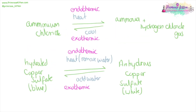The half arrow on top of the other half arrow going the opposite direction is the symbol for a reversible reaction. Ammonium chloride will decompose into ammonia and hydrogen chloride gas upon heating — this is an endothermic reaction. Cooling it is an exothermic reaction. Hydrated copper sulphate, which is blue, upon heating loses its water and turns into anhydrous copper sulphate, which is white. Adding water back in turns it back to hydrated copper sulphate.